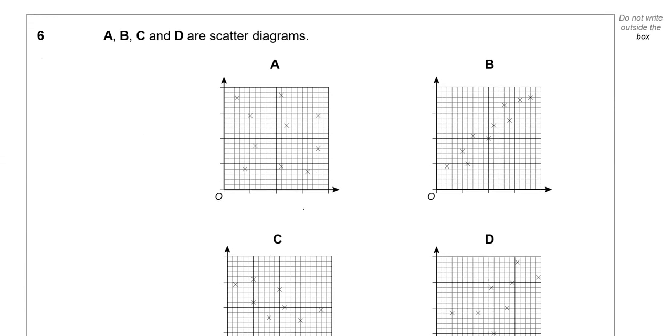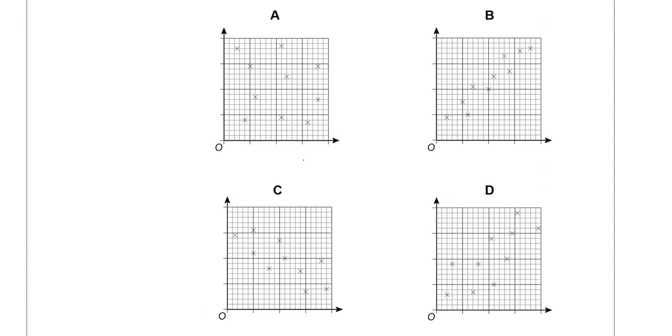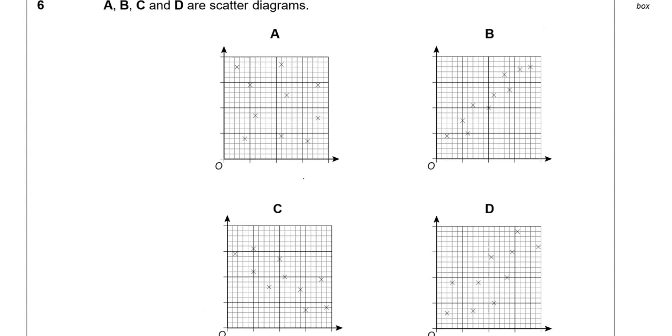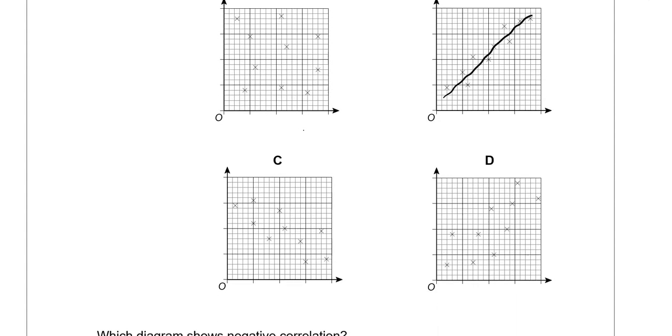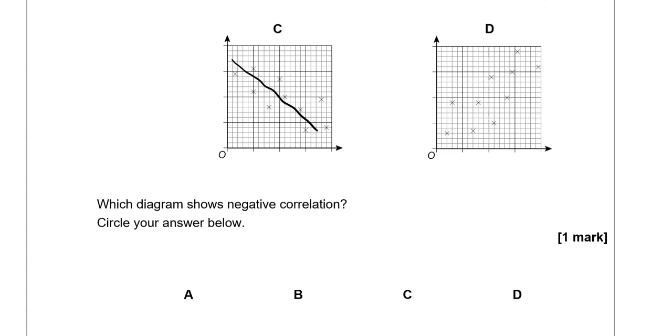A, B, C and D are scatter diagrams. Which diagram shows negative correlation? Circle your answer below. Looking at A there is no correlation whatsoever. Looking at B it's a positive correlation going upwards. Looking at C it's a negative correlation, it's going downwards. D is also a positive correlation. So the only option here is C.